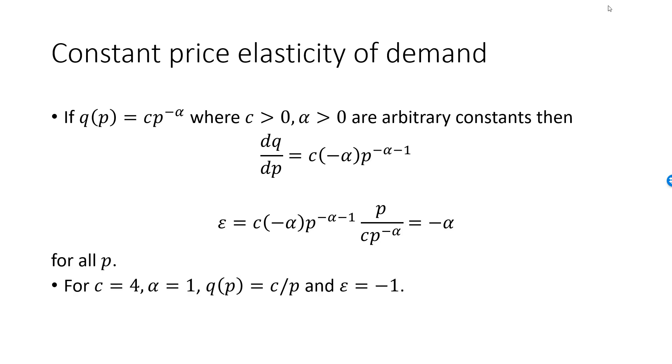For example, if c is equal to four and alpha is equal to one, then q is equal to four divided by p. According to our result, epsilon is equal to minus one, which we found in an earlier exercise, much less general than this one.